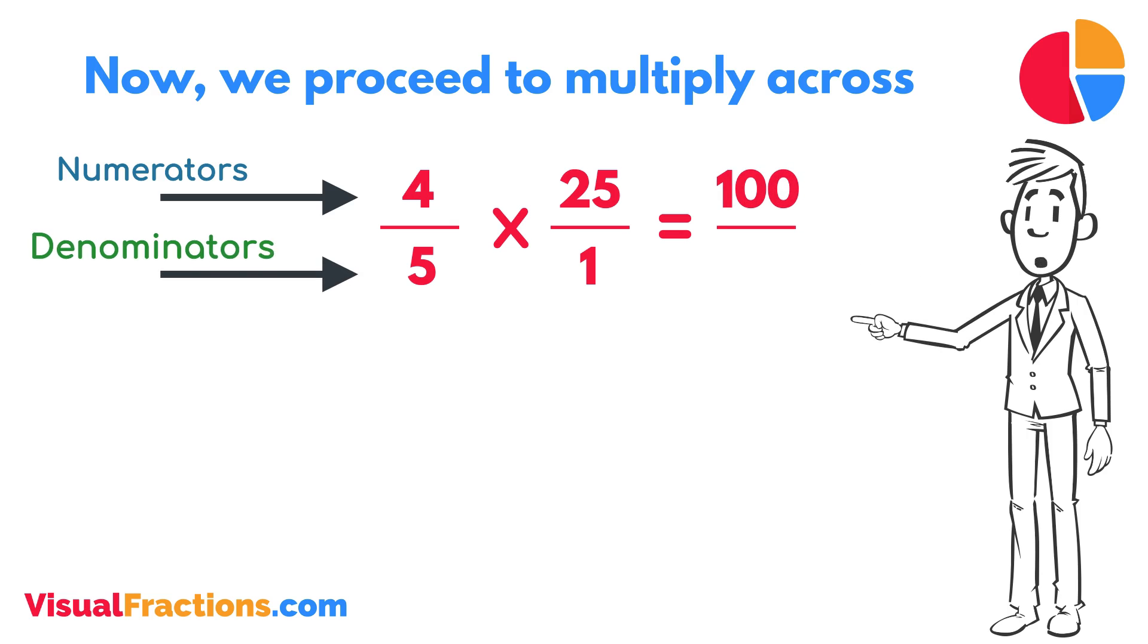Next, multiply the denominators: 1 times 5 equals 5. We now have a new fraction, 100/5.